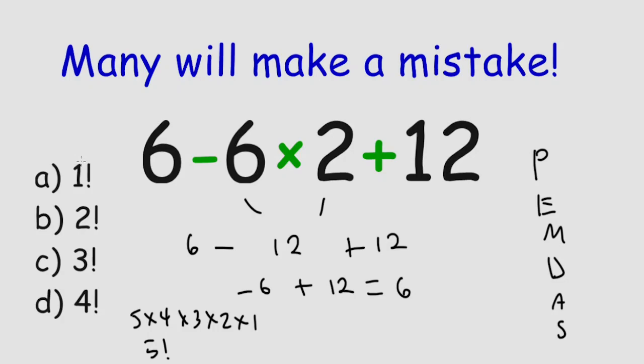So out of all these, which will give you 6? That would be C, which is 3 times 2 times 1. 3 times 2 is 6, times 1 is still 6. So that's the answer.